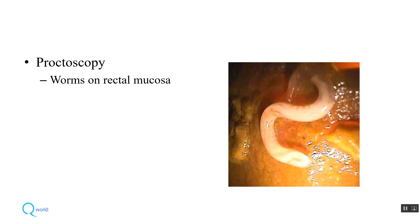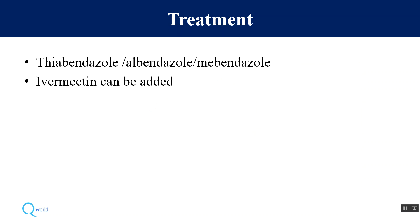On proctoscopy, you can see the posterior end of the worm embedded in the mucosa. Sometimes the entire rectal mucosa is filled with such posterior ends of worms, which is known as 'coconut cake rectum.'